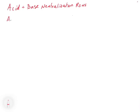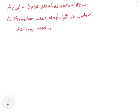Let's start with the first one: the formation of a weak electrolyte or water. The classic example would be combining a strong acid and a strong base together — for example, KOH aqueous plus HCl aqueous. To predict the products, we follow the same steps as any metathesis reaction: we exchange the partners and look for a weak electrolyte, water, or a gas.